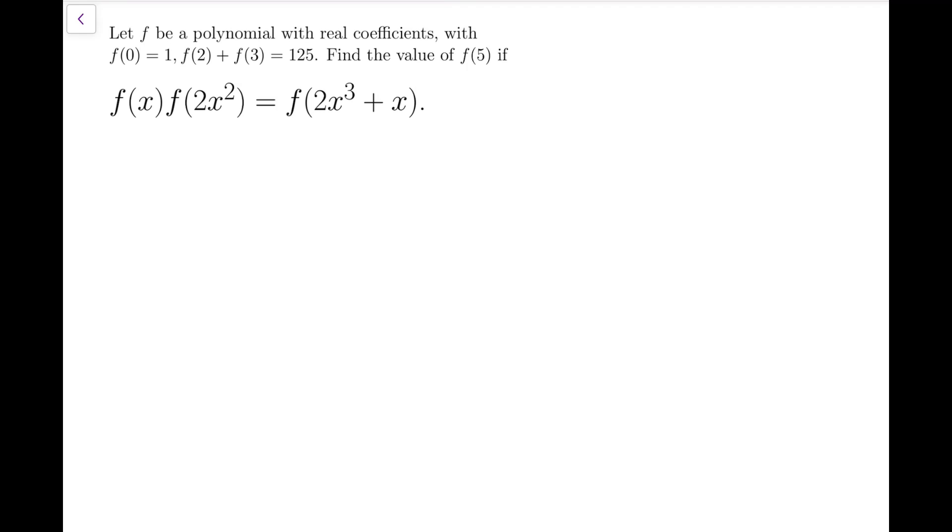Since f is specified to be a polynomial, it's very natural to consider some roots of this polynomial. So I shall start by considering a real root of f. Then I put this r into the equation x = r, and I have f(r)·f(2r²) = f(2r³ + r). And because this term is 0, so f(2r³ + r) is equal to 0 as well.